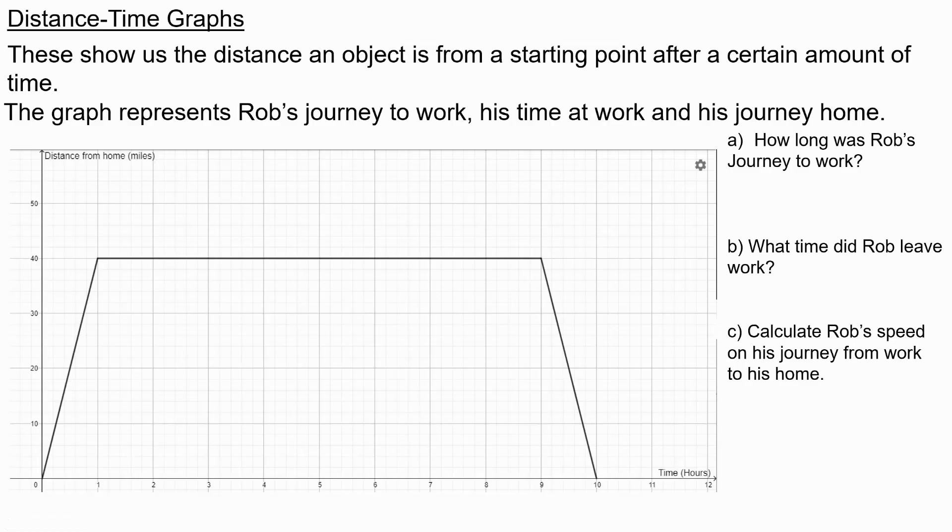A distance-time graph shows the distance an object is from its starting point after a certain amount of time travelling. The graph here represents Rob's journey to work, his time at work, and his journey home.